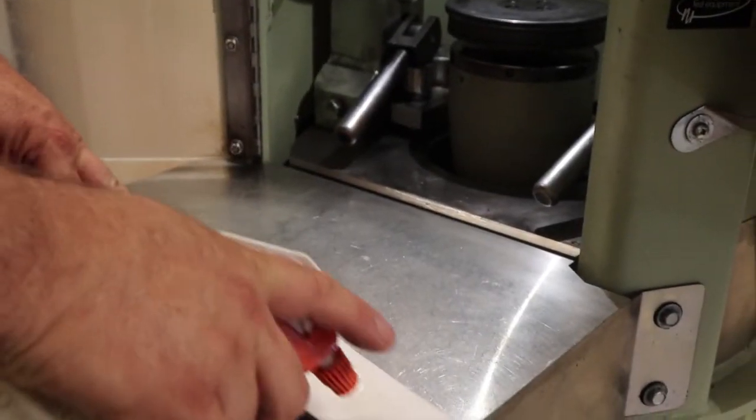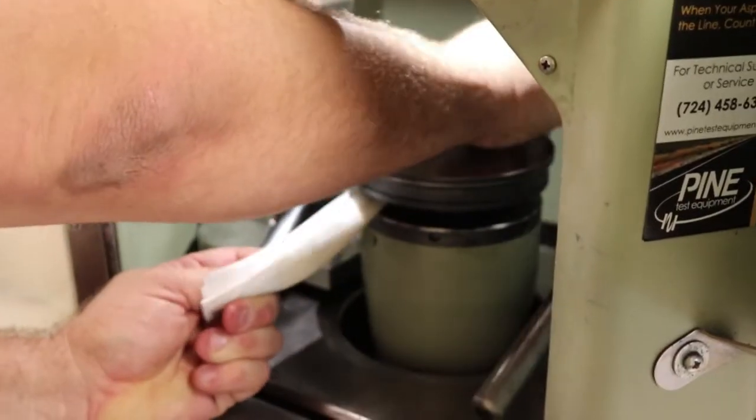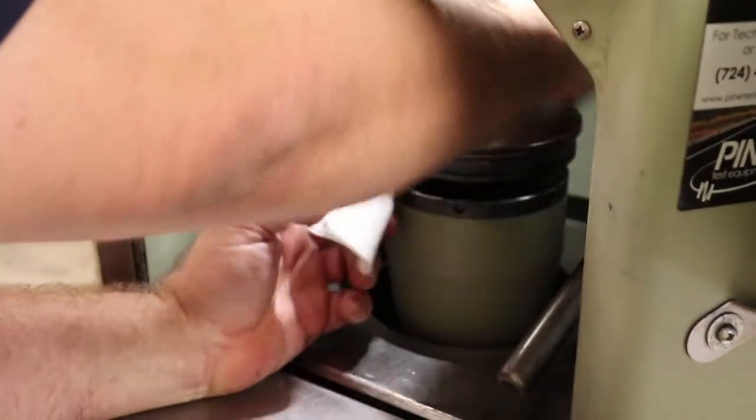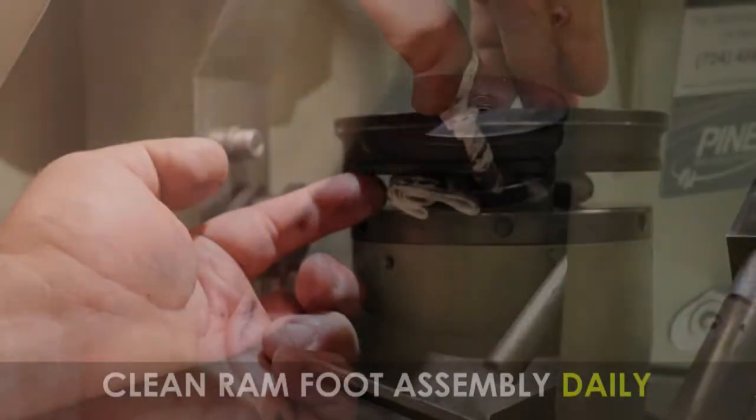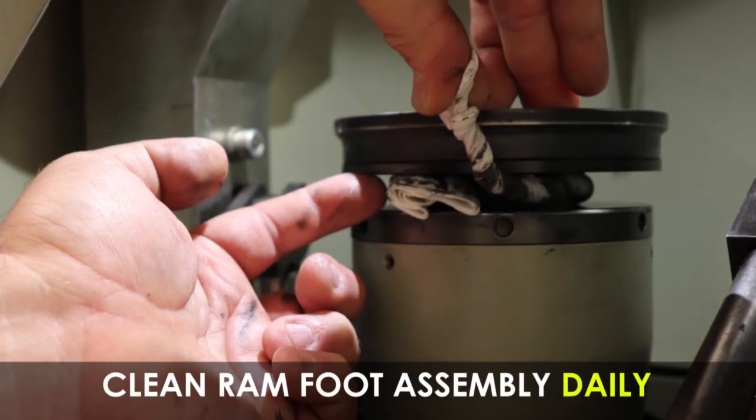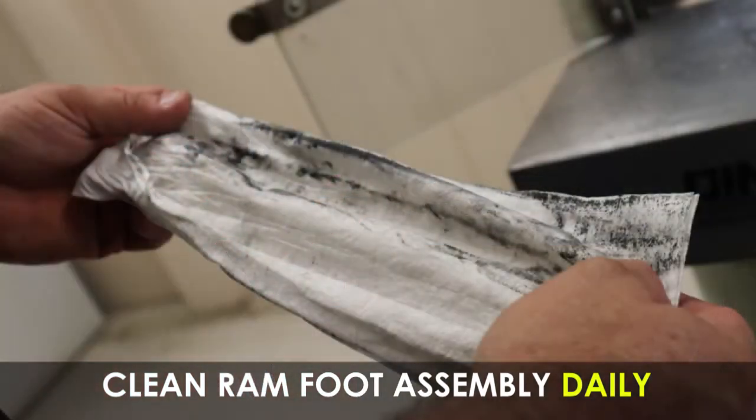Spray a clean rag with degreaser and twirl it around the gap of the RAM foot assembly to remove the old anti-seize. This step usually needs repeated several times until the rags are relatively clean.